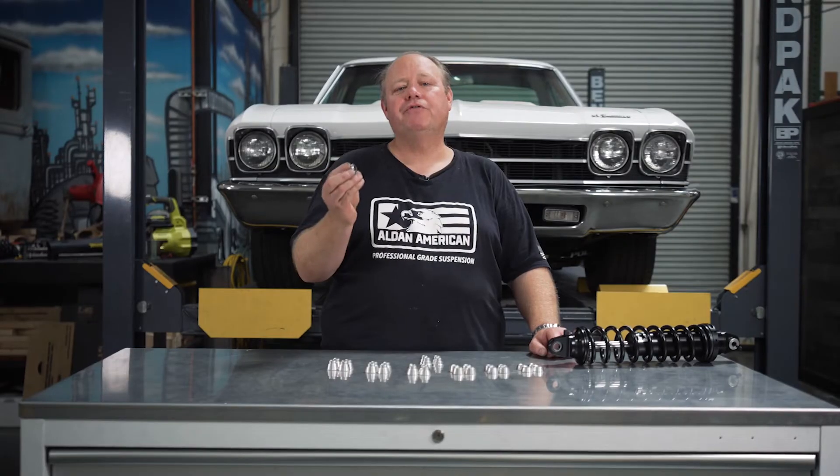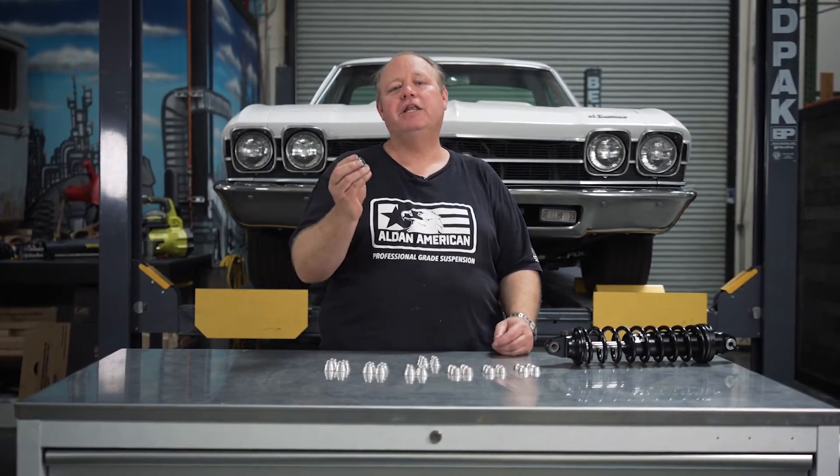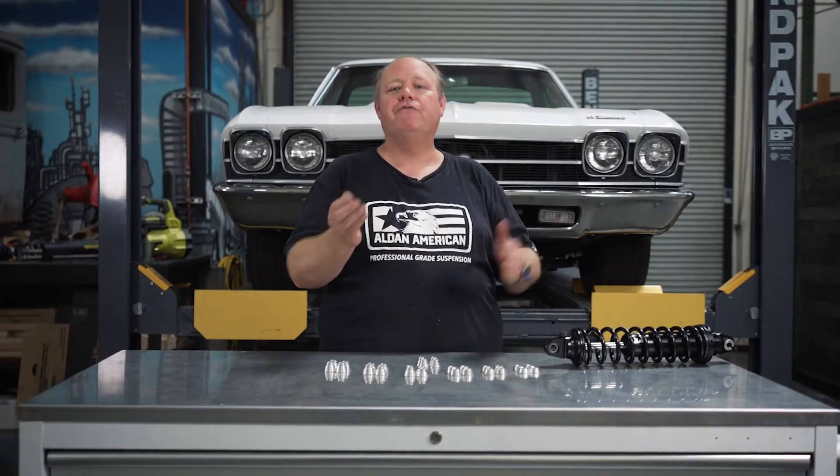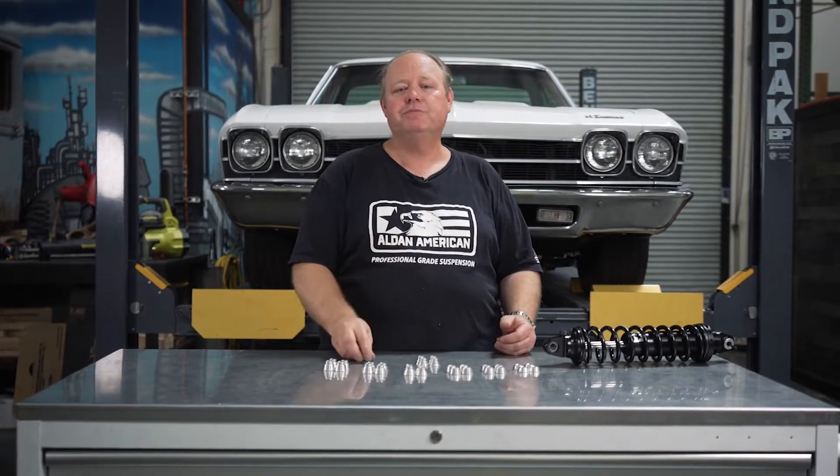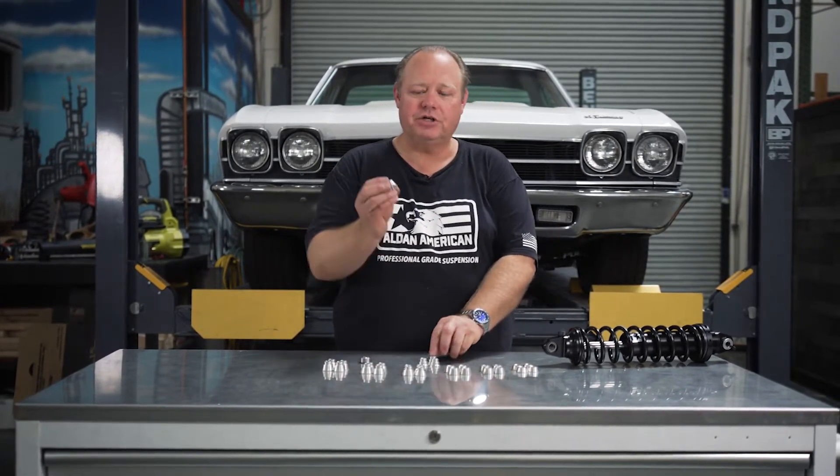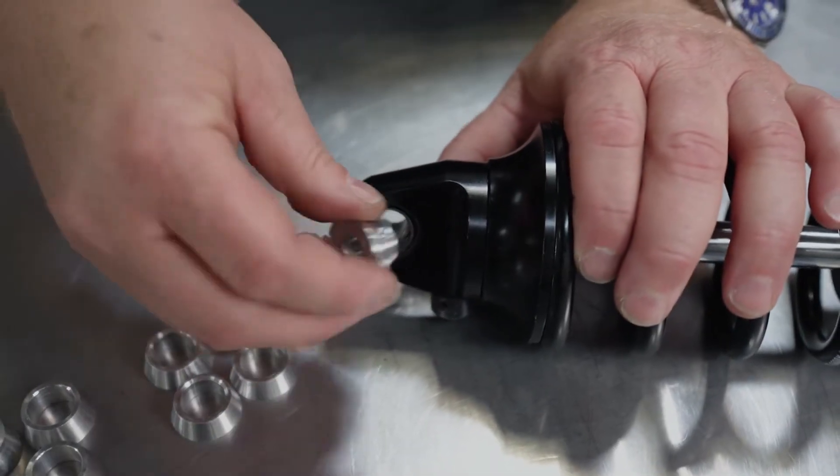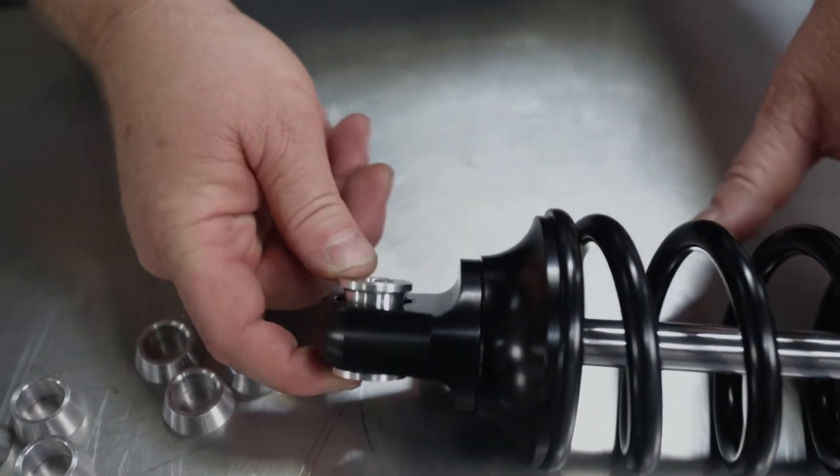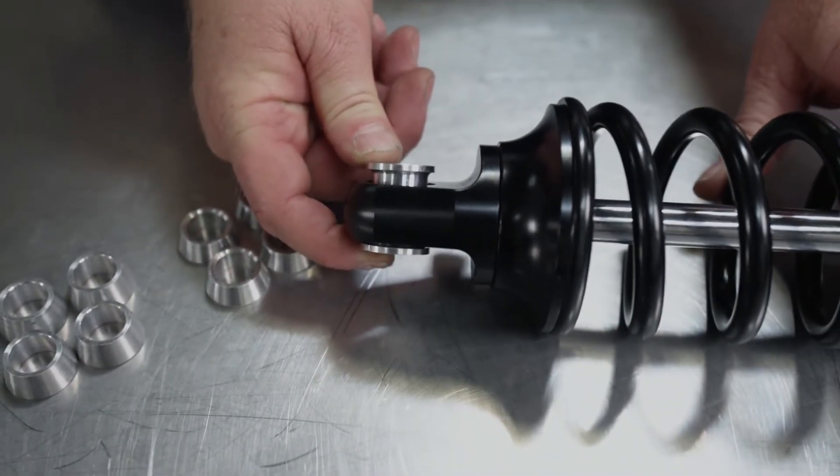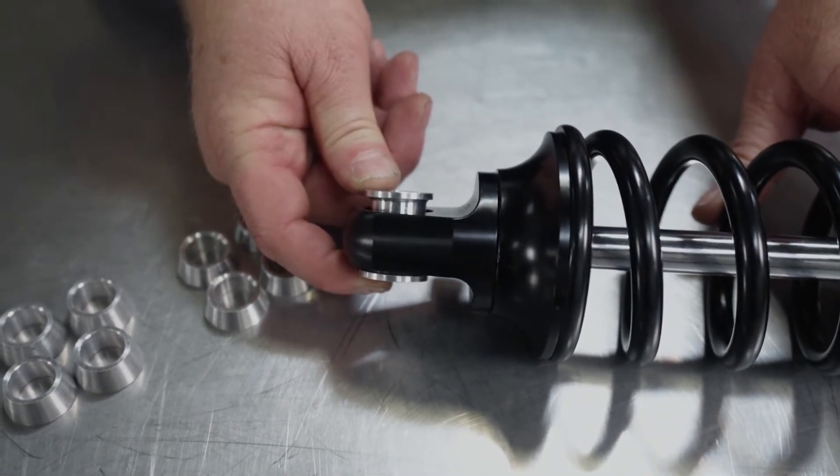In some applications we use our five-eighths bearings and in order to take the five-eighths bearings and make it fit in the frame we use the spacer. So when we do the spacer we'll take it and put on both sides of the bearing and then that will give it either an inch and a quarter, inch and three-eighths, or inch and a half distance for your tabs on your frame mount.